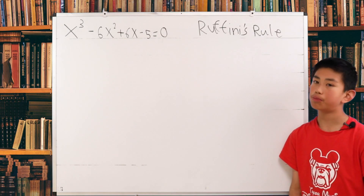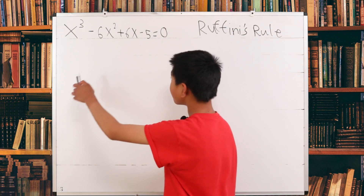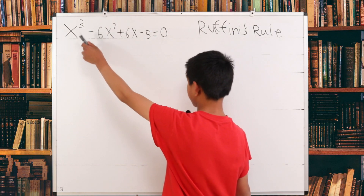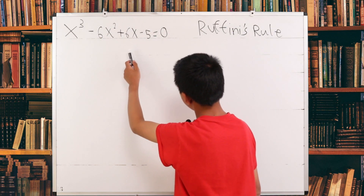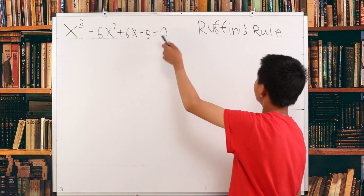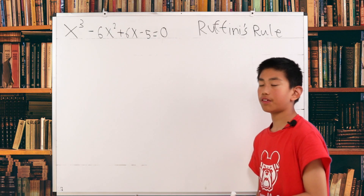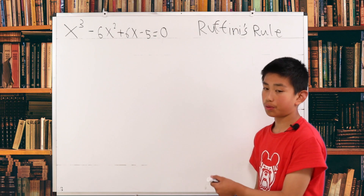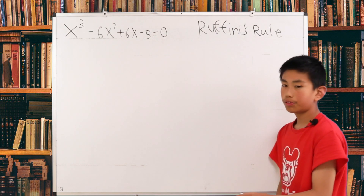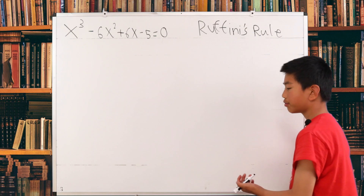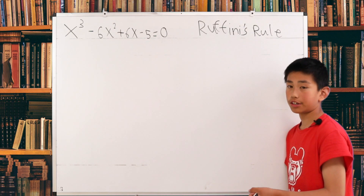Today we have another problem where we have the polynomial x cubed minus 6x squared plus 6x minus 5 equals 0, and we want to find what the three x's are. There are actually lots of ways of solving this problem, but we're going to explain two.